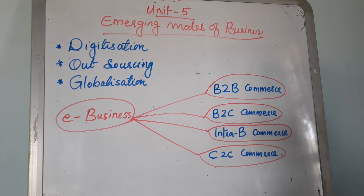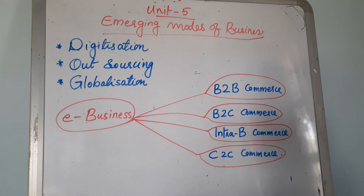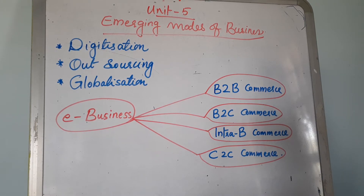All these terms — digitalization, digitization, outsourcing, and globalization — we can call the new trends in business. About e-business: e-business means the conduct of industries, trade, and commerce using computer networks. E-business — the full form is electronic business — means doing business through computer networks.